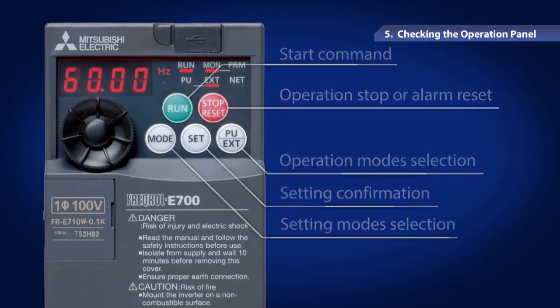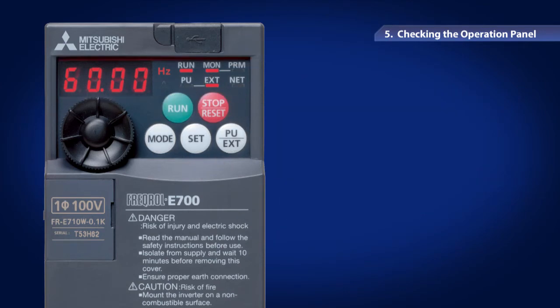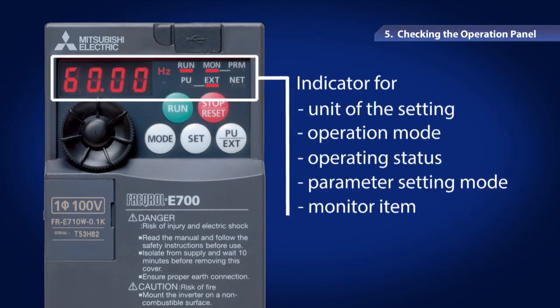In addition, you can check the unit of the setting, the operation mode, the operating status, the parameter setting modes, or the monitor item on the display of the operation panel.